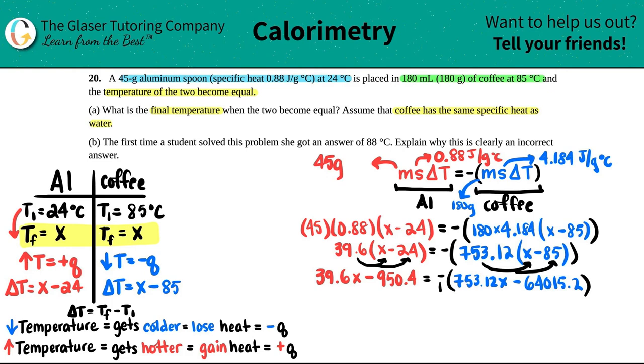The next thing I would do is just distribute this negative, get rid of these parentheses—you're basically turning the signs over by multiplying by a negative one. This would be a negative value and this would be positive. Now let's get the X's on one side and the numbers on the other. I'm going to plus 753.12X on both sides, and move the number over, so I'm going to plus 950.4.